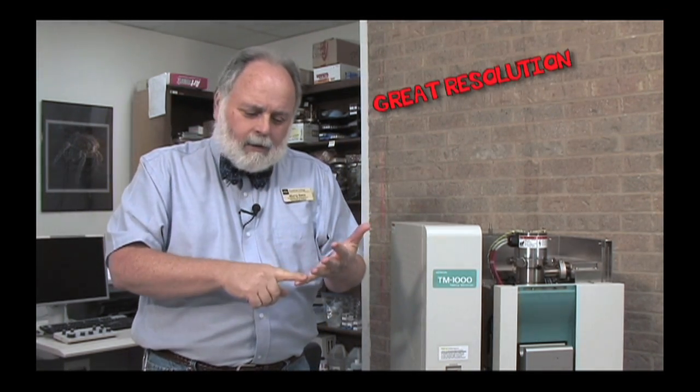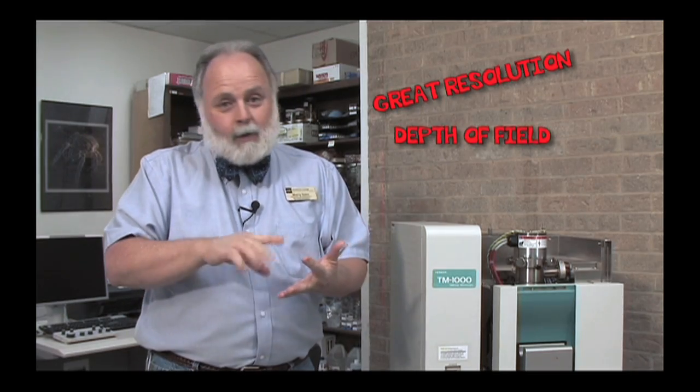So what is an electron microscope and what does it do? An electron microscope uses a beam of finely focused electrons to form a very large image of an object. It gives us great resolution, depth of field, and of course great magnification. This little scope right here can actually magnify up to 10,000 times.